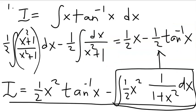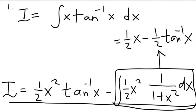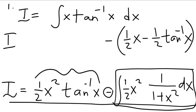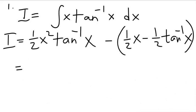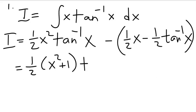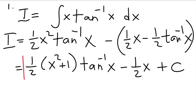Having evaluated this integral, we can put everything together — don't forget the minus sign. Combining and simplifying all the terms, the final answer is (1/2)(x²+1)·arctan(x) minus (1/2)x plus the integration constant C.